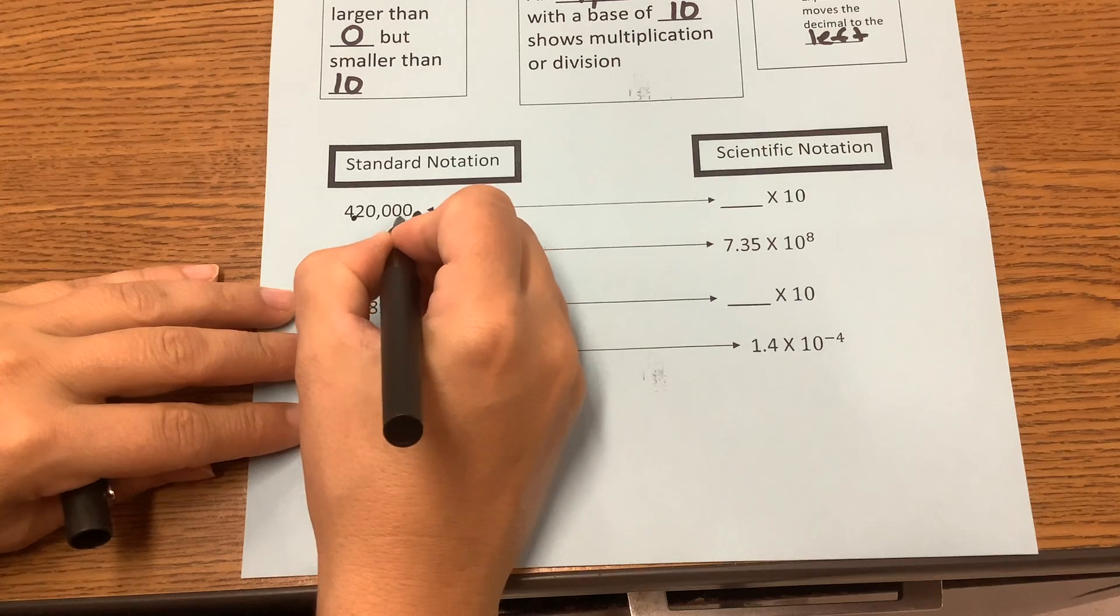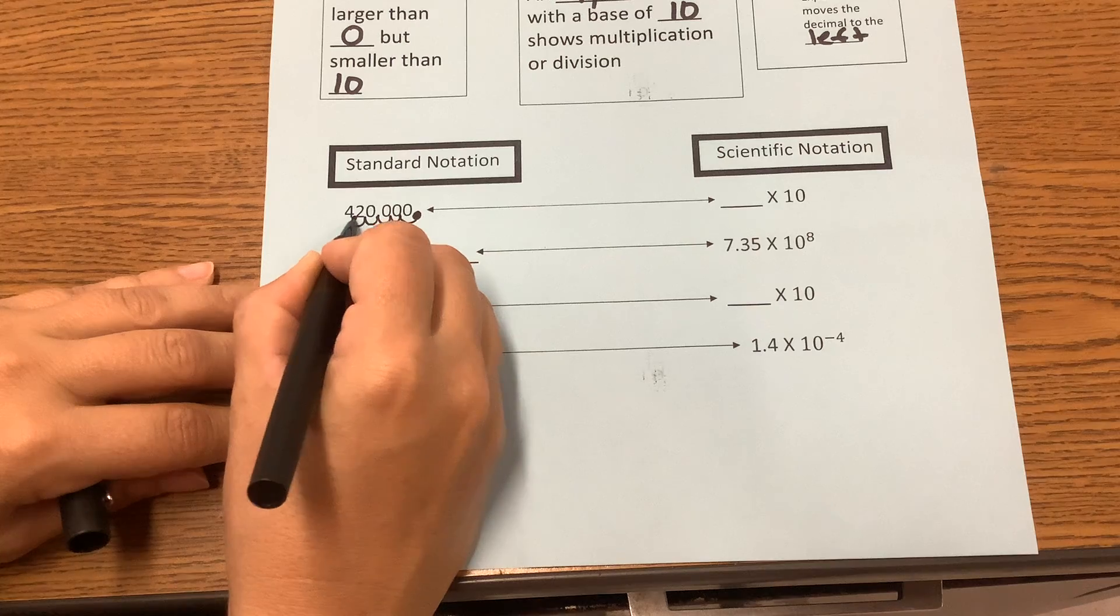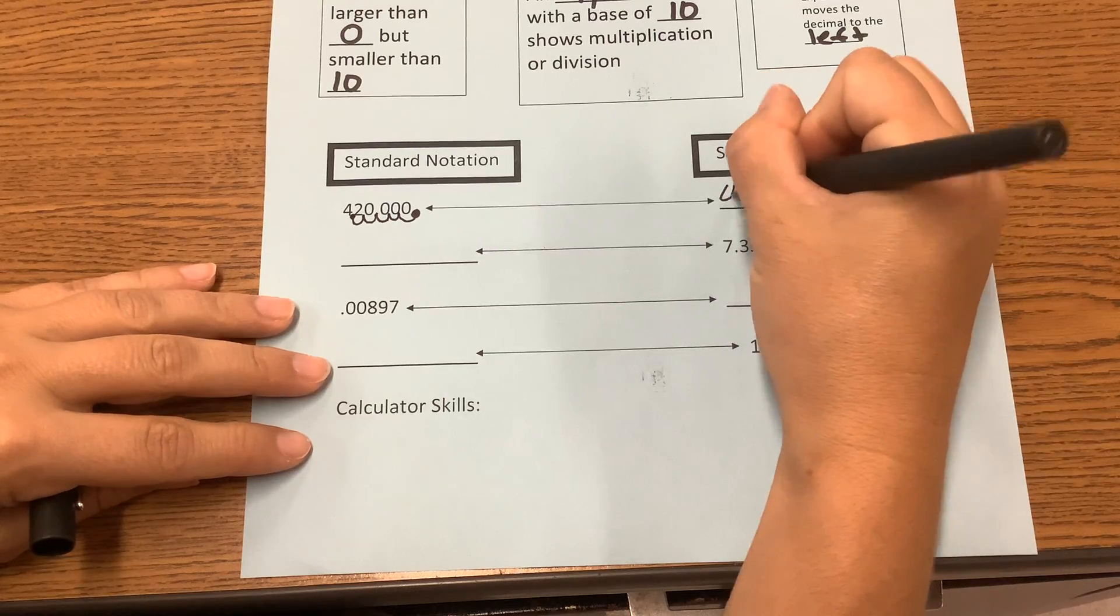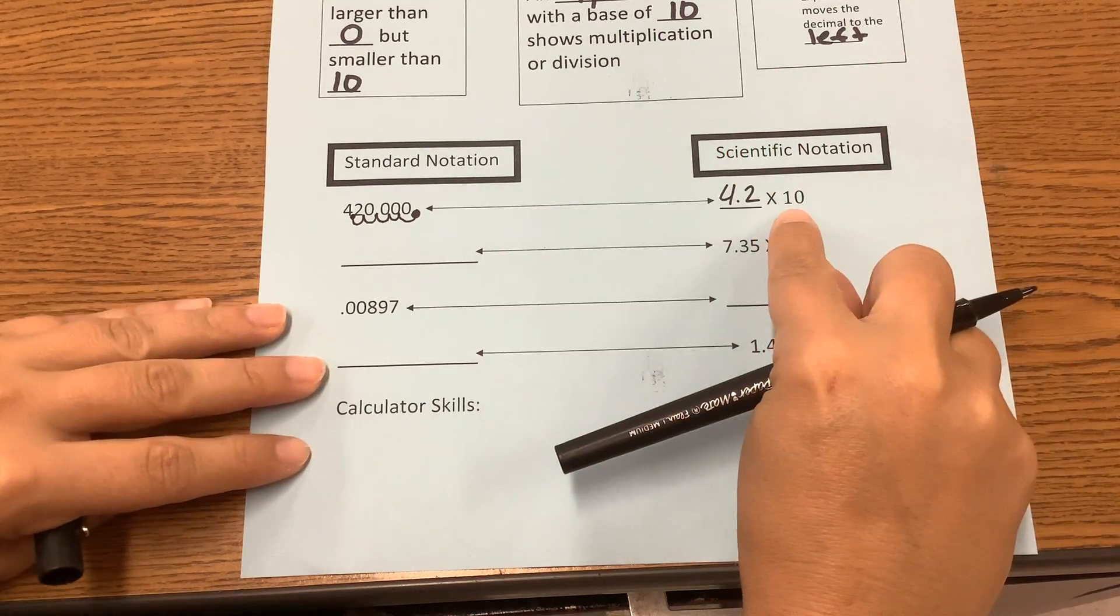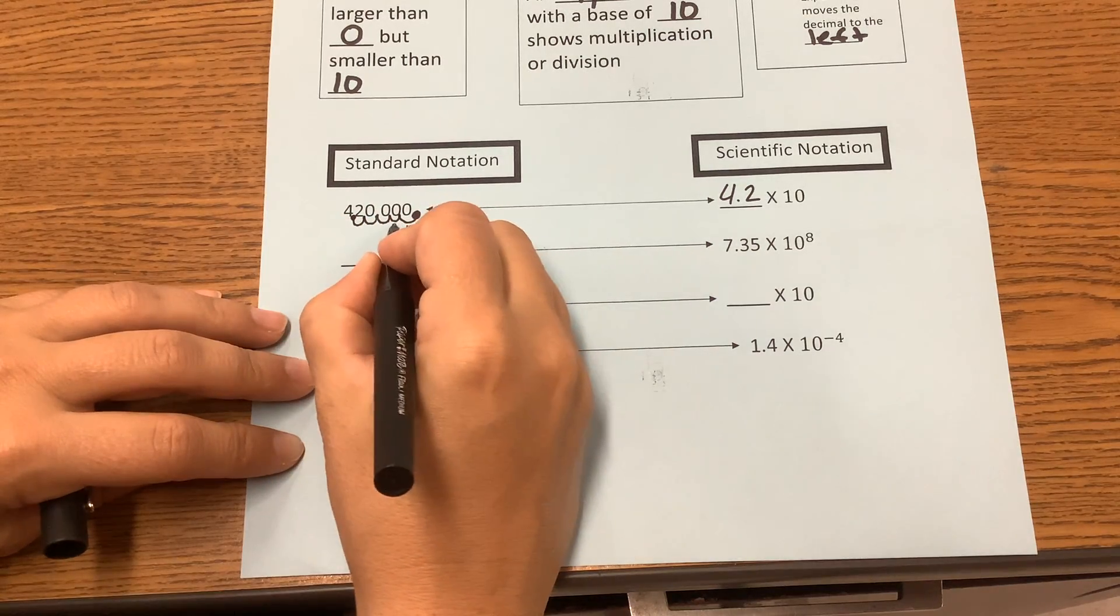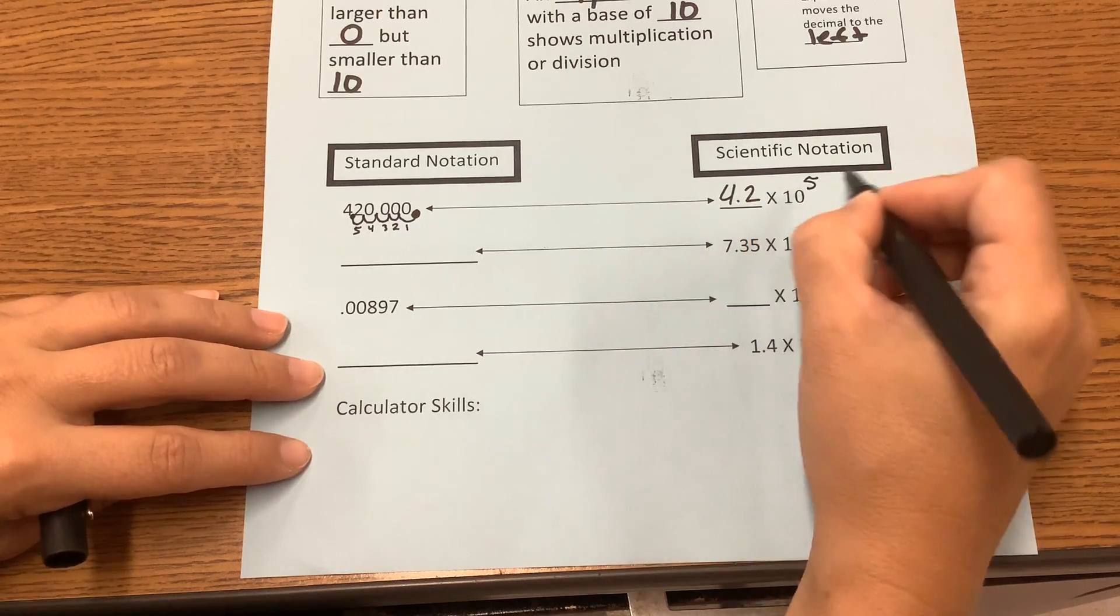And we're moving our decimal back so that this is 4.2. So we're moving it back 1, 2, 3, 4, 5 places. So this is going to be 4.2 times 10—and what do you think the exponent is going to be? It's going to be 5 because we moved it back 5 places. So it's to the 5th power.